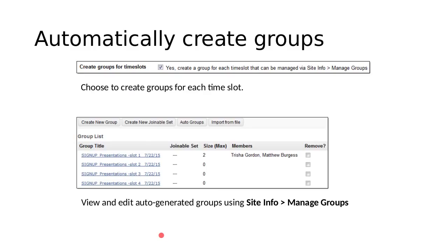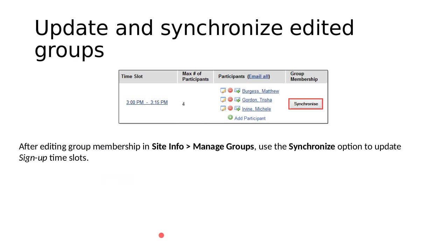The automatically generated groups will give you the sign-up slot as the group name along with the date of the event and the maximum size for the group. When you go into Site Info > Manage Groups to change membership or edit groups, you can then go back into sign-up and sync the groups with the time slot by clicking a synchronize button under group membership to update the time slots.